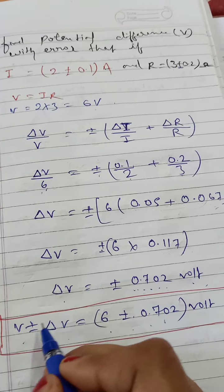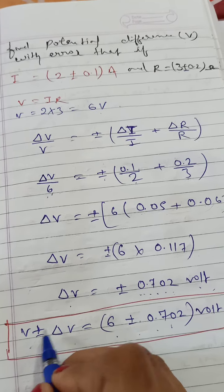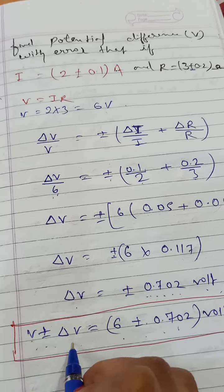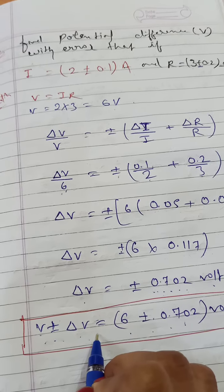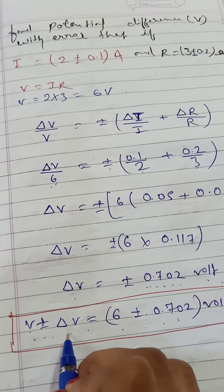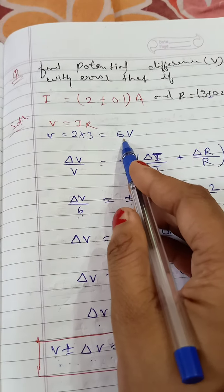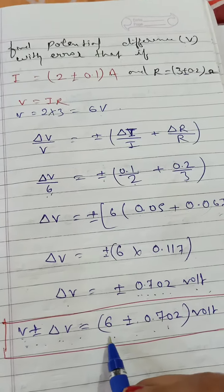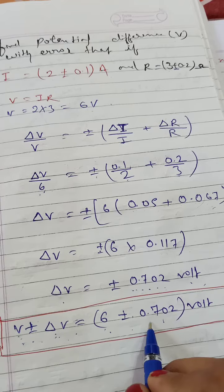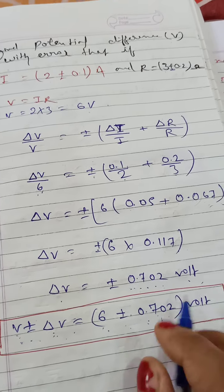We represent potential difference with error as v plus minus delta-v. The value of v is 6 volts and the value of delta-v is plus minus 0.702 volts.